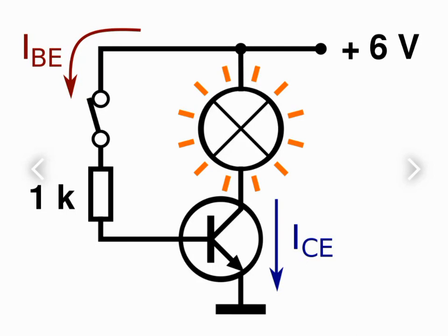Here is another example that helps us understand how a transistor can act as a switch. This is an NPN transistor where the collector, base, and emitter are shown. The emitter is grounded, the collector is connected to the supply voltage through this light bulb, and the base is shown here.